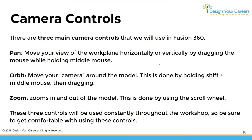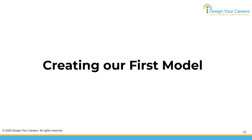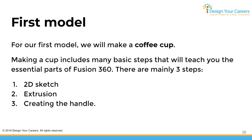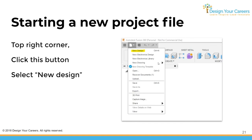Now we'll create our first model — the coffee mug. There are three basic steps: the 2D sketch, the extrusion, and creating the handle. To start a new project, click the button in the top right corner and click New Design. I'll demonstrate in Fusion 360 — click the top left, click File, then New Design. This creates a completely blank empty area where we can start creating and sketching.